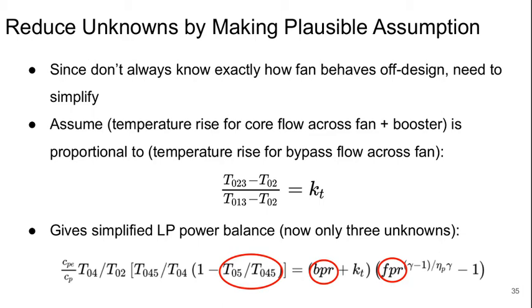This gives a simplified power balance where now we only have three unknowns which basically come down to be the fan pressure ratio, the bypass ratio, and the low pressure turbine total temperature ratio.